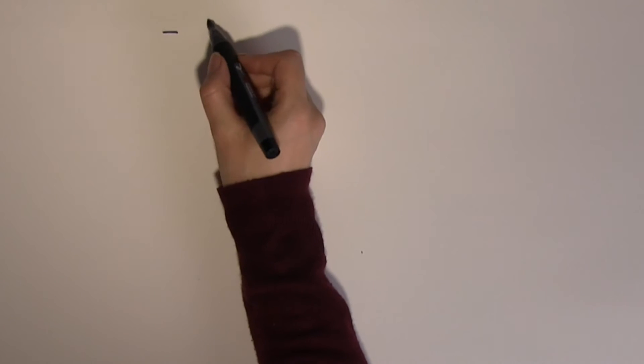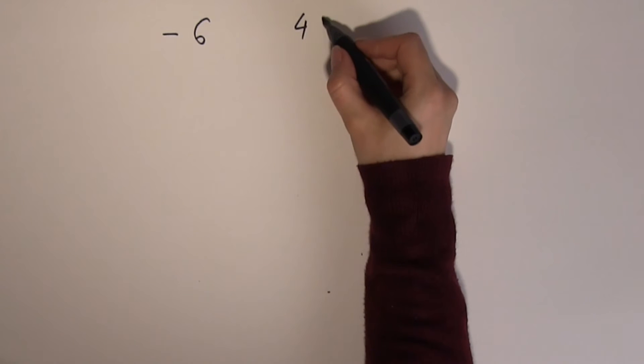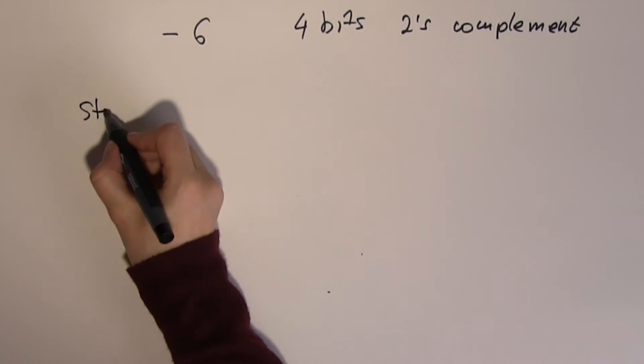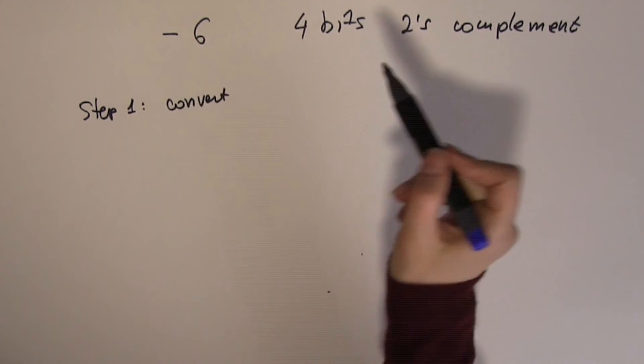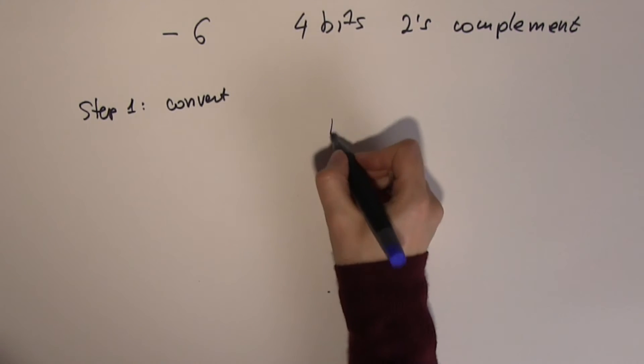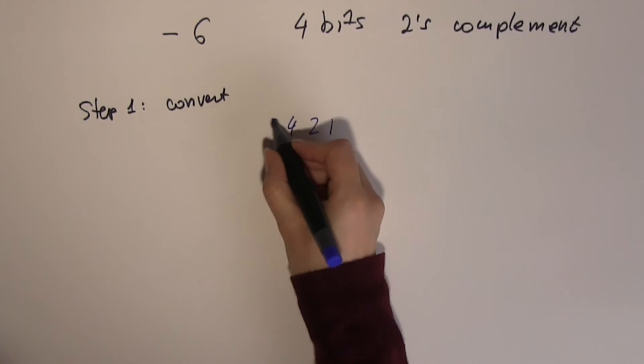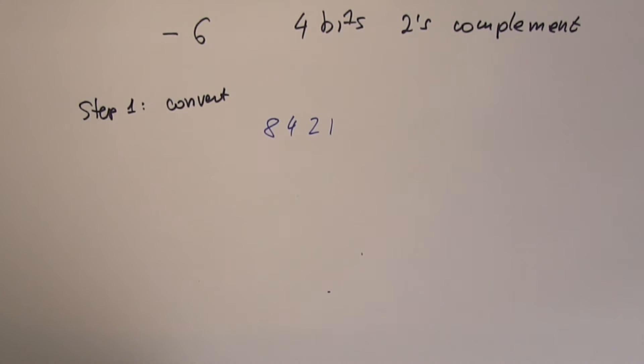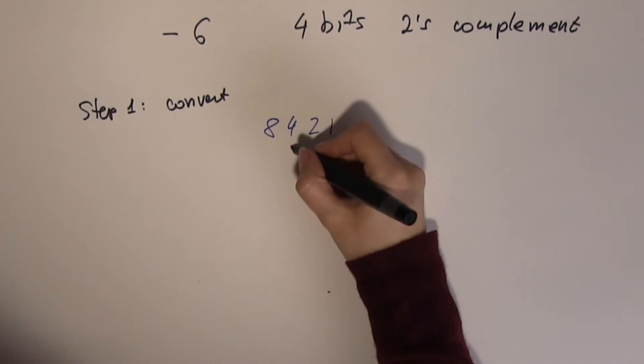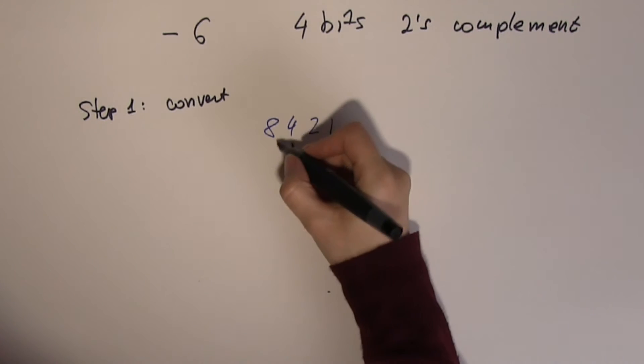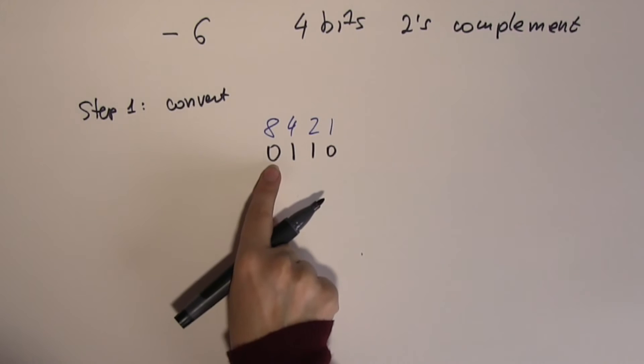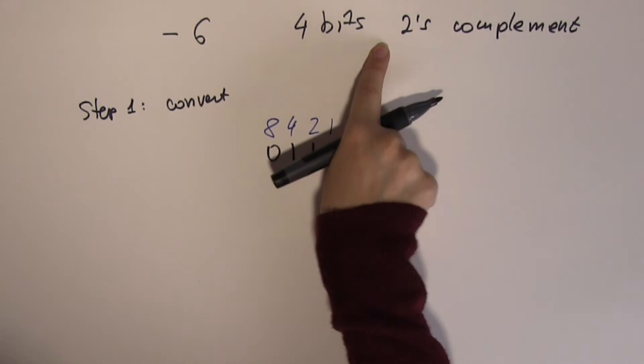Let's look at minus 6 and convert it using 4-bit 2's complement. Step 1: convert. 4 bits, I'm using 1, 2, 4, and 8. I know that negative 6 I will be able to show because it's less than 8. 6 is 4 plus 2. I need the rest of the 0's, and I need the 0 here as well because I'm talking about 4 bits 2's complement.